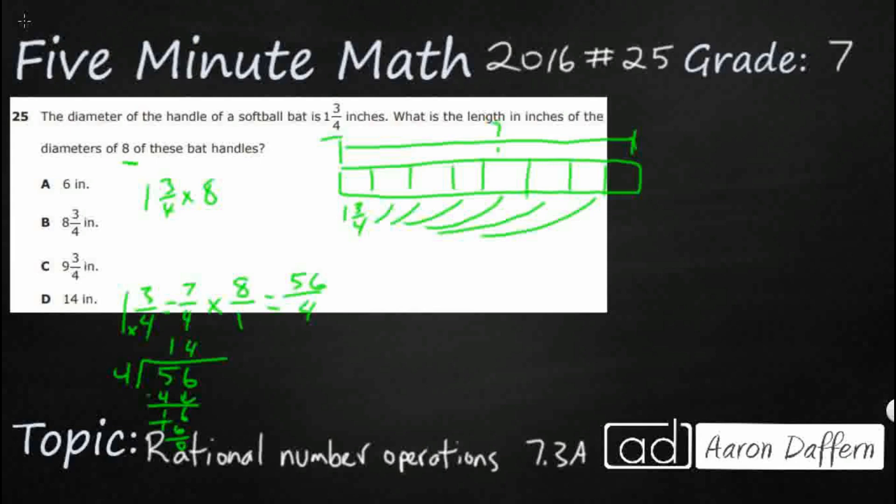I did mention there was another way to do that. If you didn't want to mess with that improper fraction and mixed number, what we can do is we can change 1 and 3/4 into a decimal. Now, if you don't happen to know what 3/4 is as a decimal, easiest way to do is to divide it up. Divide your 4 into 3. 4 goes into 3 zero times, obviously.